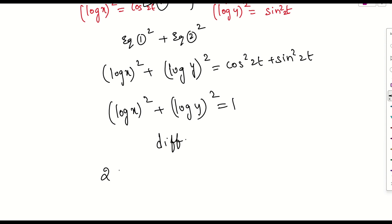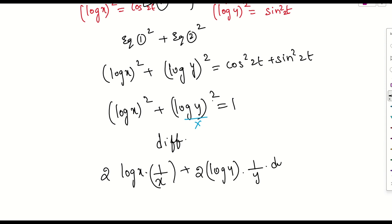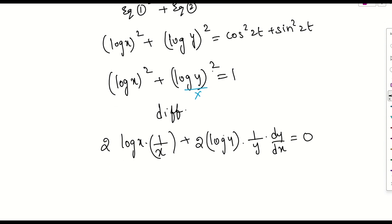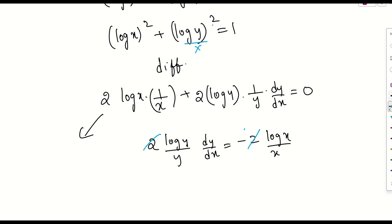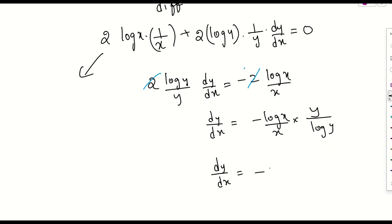Differentiating both sides: 2·log x · (1/x) + 2·log y · (1/y) · (dy/dx) = 0. Rearranging: 2·(log y / y)·(dy/dx) = -2·(log x / x). Cancelling the 2s and rearranging: dy/dx = -(y · log x) / (x · log y).